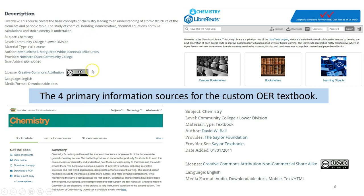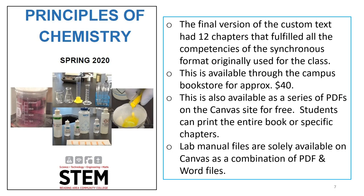There are four main sources we used for our custom textbook. We used two sources from OER Commons: North Essex Community College in Massachusetts and the Saylor Foundation — and yes, this was published ten years ago, but introductory chemistry doesn't change; the fundamentals are sound and rigid. We also used LibreText Chemistry and OpenStax Chemistry for additional content. We made this final product: 12 custom chapters, available free online through a series of PDFs in Canvas.